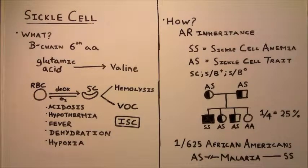Sickle cell anemia. Sickle cell anemia is a mutation of hemoglobin, which is a protein found in red blood cells that's responsible for carrying oxygen.